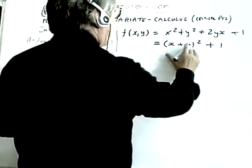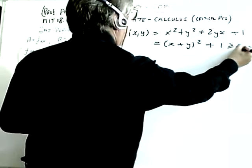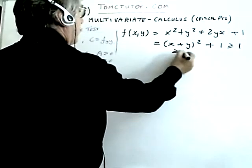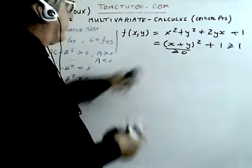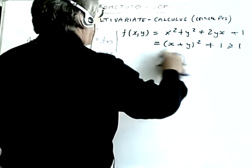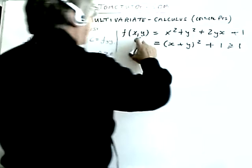Well this function (x + y)² + 1 is always greater than or equal to one because that quantity is always greater than equal to zero. It's also a positive number.